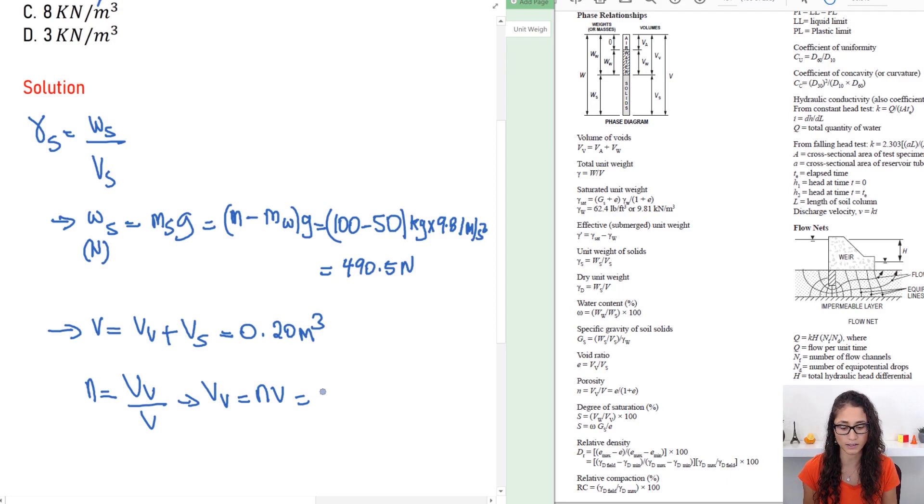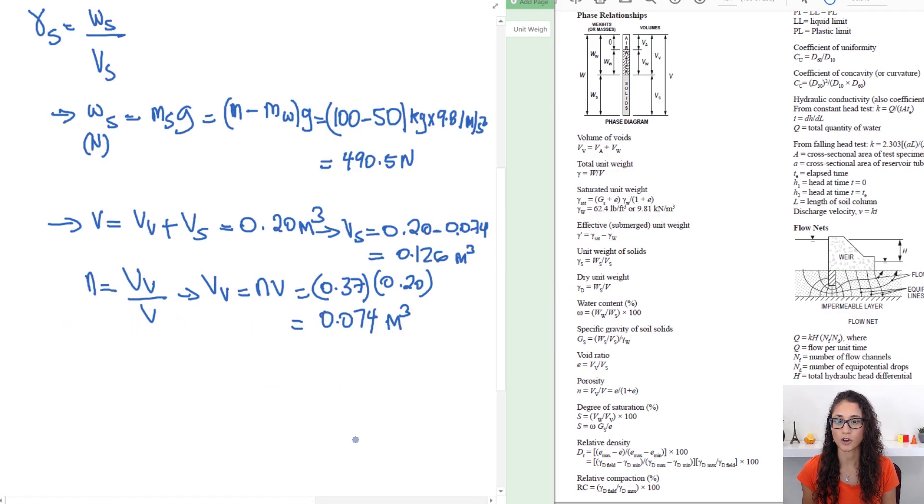So n is equal to 0.37, V is equal to 0.20. This should give you 0.074 for Vv. Now here you can come back here and we rearrange the equation to solve for Vs. So Vs is equal to 0.20 minus 0.074 because that's the one we just calculated. So this gives you an answer of 0.126 cubic meters.